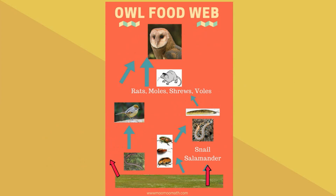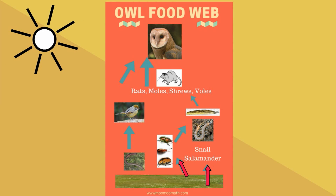The producers are represented by grass and it would include other plants and trees. And most importantly, the sun drives the entire food web. So there you have the owl food web.